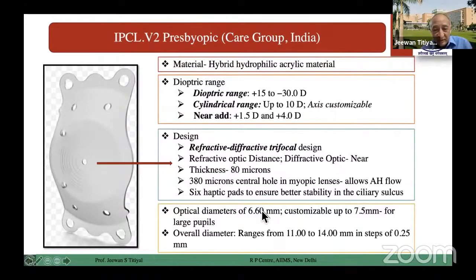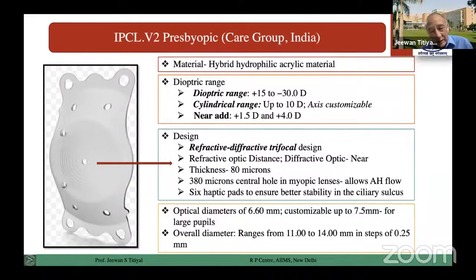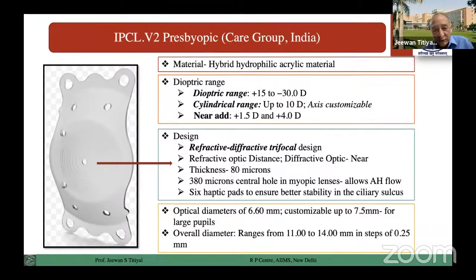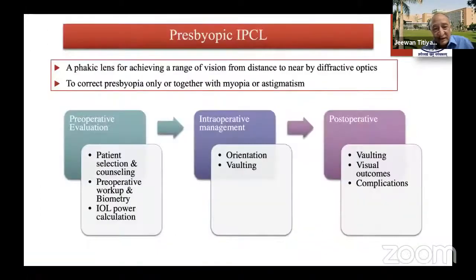At this age group, with the advantage of correction, the other visual phenomena are normally well tolerated by these lenses. Very thin lens in the center — 80 microns — and it also has a 380-micron center flow design, which may decrease the onset of cataract in these patients. Most importantly, the optic diameter is 6.6 millimeters, which can be customized to a larger diameter, especially for patients with larger pupil size. But in the Indian population, the pupil at this age group is not very large, so most patients will fit into these designs.